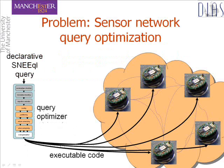The problem we're looking at is the problem of optimising the evaluation of declarative queries over sensor networks. Sensor networks are a highly constrained platform which leads to challenges not present in robust networks. We present an optimiser architecture for Sneakle, an expressive query language for querying acquisitional as well as classical streams, covering all query optimisation phases required to map a declarative query to executable code.